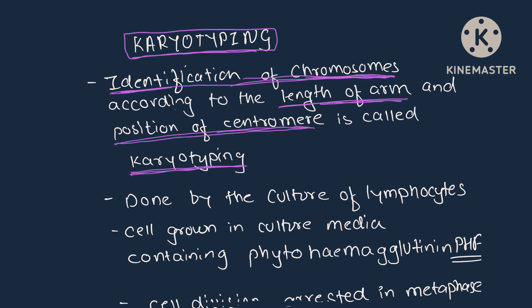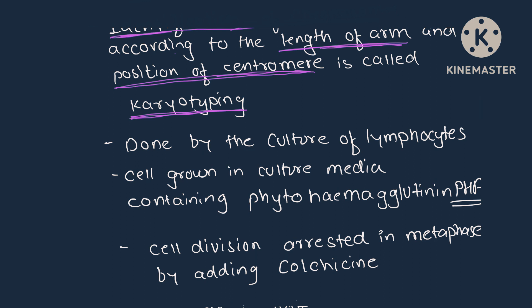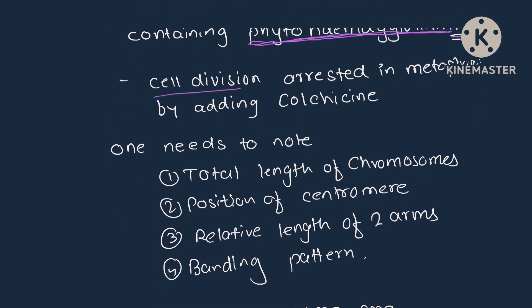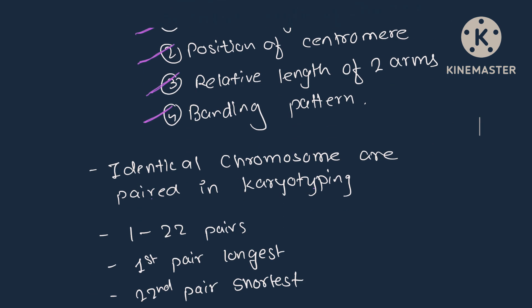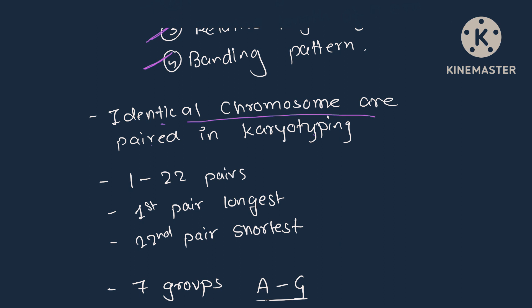Karyotyping is done by the culture of lymphocytes. The cells are grown in a culture media containing phytohemagglutinin (PHA). Cell division is arrested at the stage of metaphase by adding colchicine. In karyotyping, one needs to note the total length of the chromosome, position of the centromere, relative length of the two arms, and banding pattern.